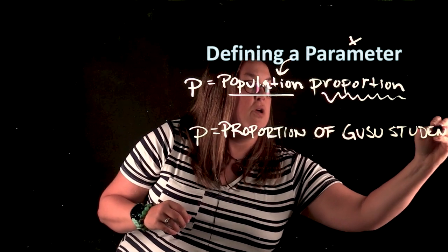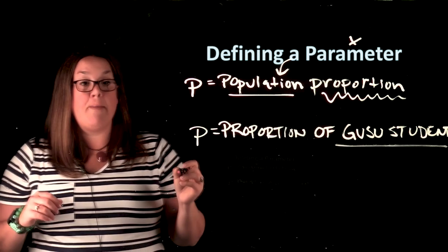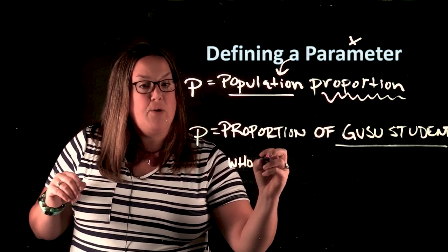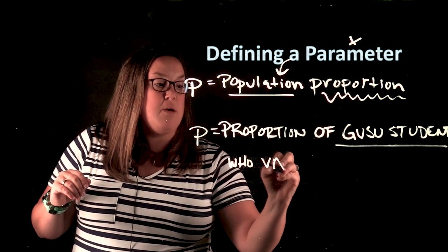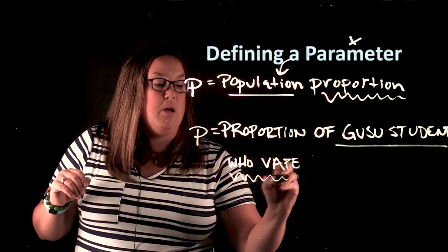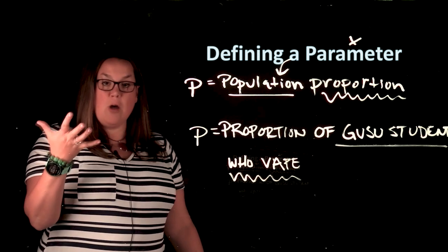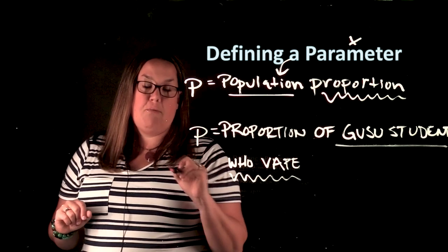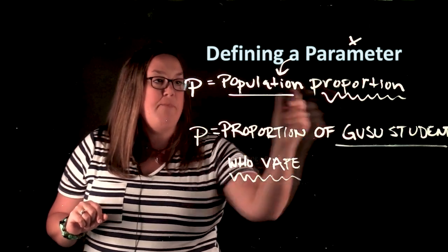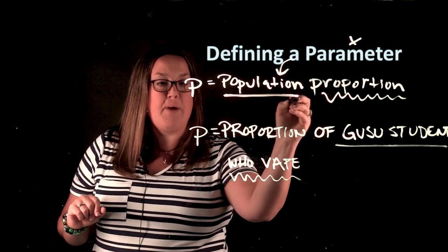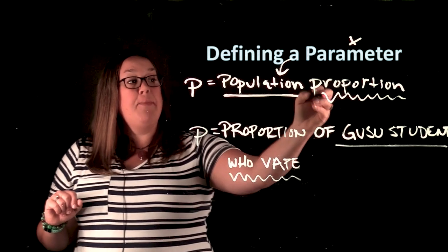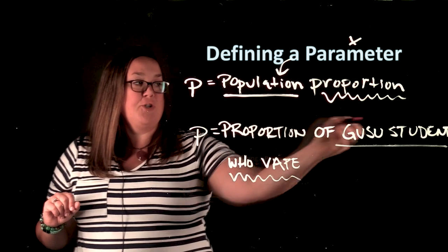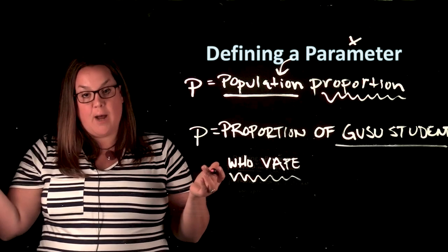So here, this is my population. And then I need to talk about what the proportion is. My proportion is going to be calculated by those who vape — so that's going to be my proportion that I'm interested in. So this is how you would define a parameter for P. P equals, so it's proportion, percent, or probability depending on the problem, of your population, because this is a parameter — you want to talk about the population, not the sample. And then you state what you're trying to measure. So here it's the proportion who vape. Proportion of GVSU students who vape — that's how I would define a parameter P.